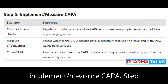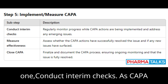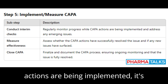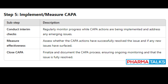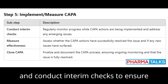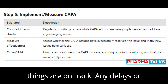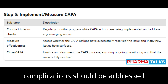Stage 5: Implement and Measure CAPA. Step 1: Conduct Interim Checks. As CAPA actions are being implemented, it's important to regularly monitor progress and conduct interim checks to ensure things are on track. Any delays or complications should be addressed promptly.